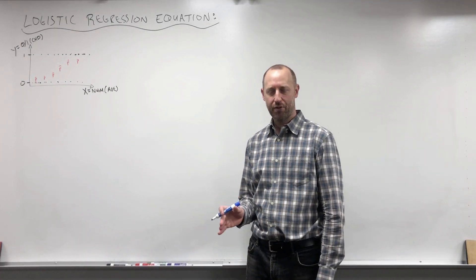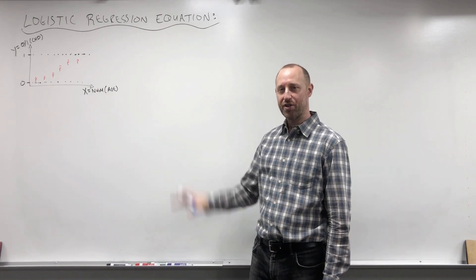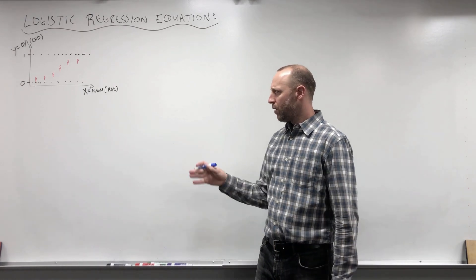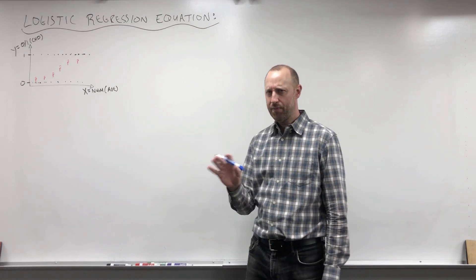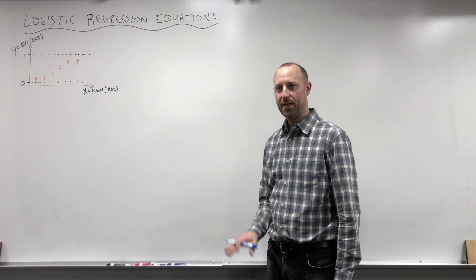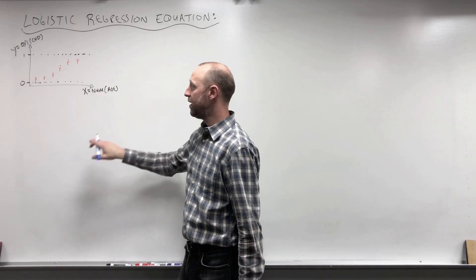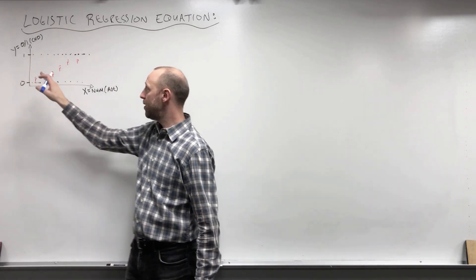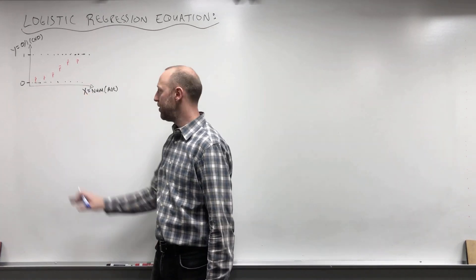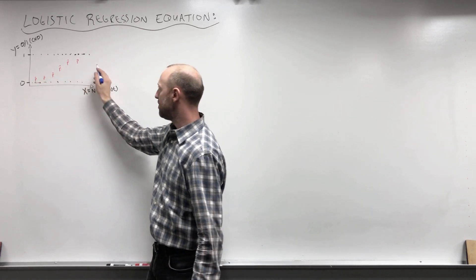We spent some time talking about logistic regression and introducing the idea. Now we'd like to build up the ideas of where the logistic regression equation comes from. We're going to approach it mostly conceptually, dealing with a little bit of mathematics, but making some jumps without getting too deep into the math. Where we left off was looking at an example with a numeric X variable — say, age — and a binary outcome of yes or no, looking at evidence of coronary heart disease. The scatter plot shows these data points, and we calculated the proportion with coronary heart disease within age groups, and we want to fit some model to describe this.